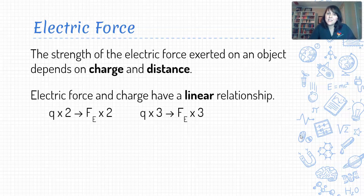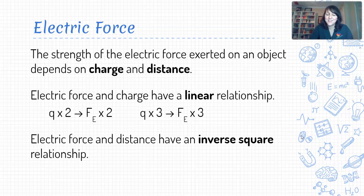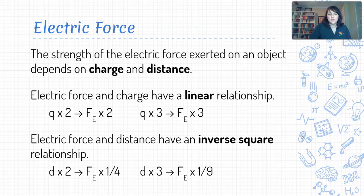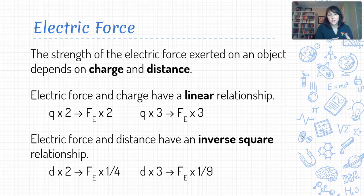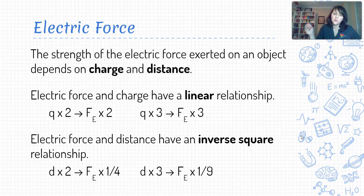What about the relationship between distance and electric force? There's that inverse square relationship again. We see an inverse square pattern relating electric force and distance, which means that if we double the distance between two charged objects, the electric force multiplies by one over two squared — in other words, our electric force drops to one fourth of what it used to be. If we triple the distance, our electric force drops to one ninth because it's one over three squared.